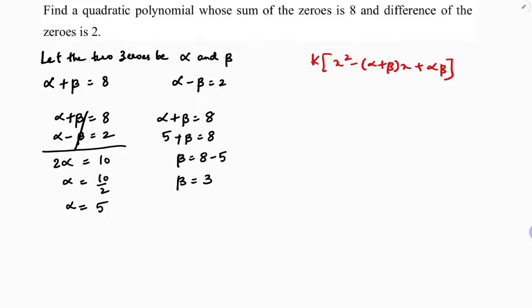Now we have alpha and beta. The product of the zeros, alpha into beta, with alpha equal to 5 and beta equal to 3, gives alpha into beta equal to 15.